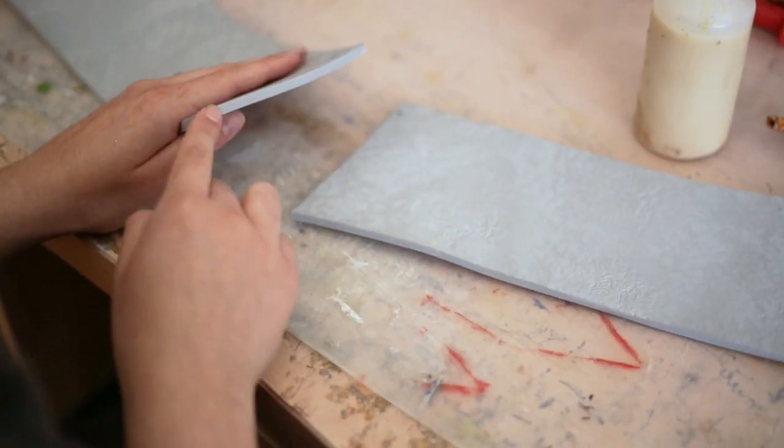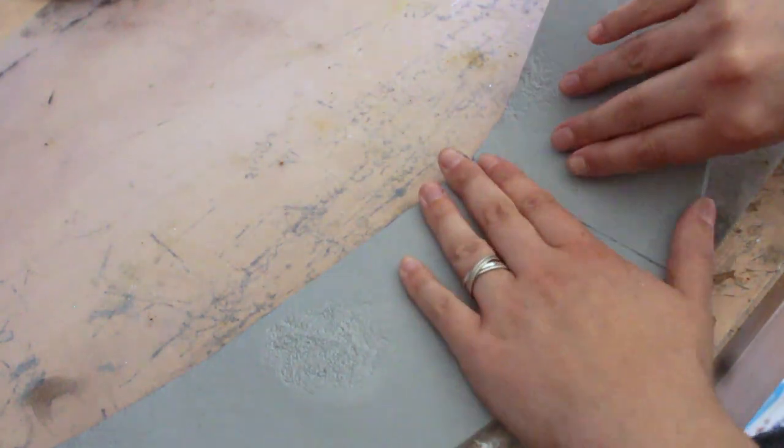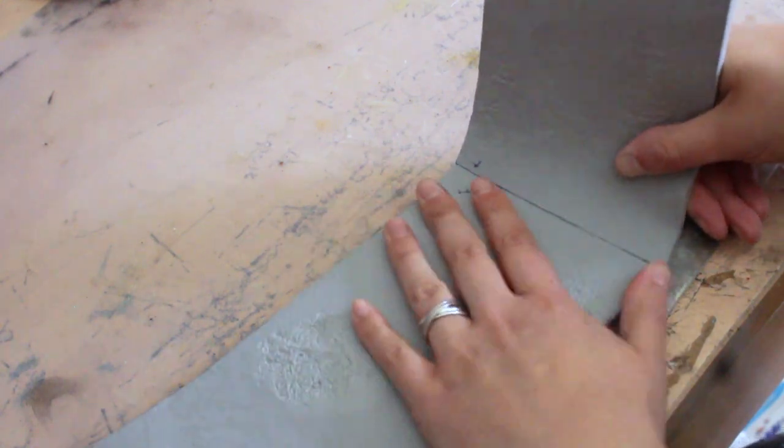Next up I started gluing my foam pieces together using contact cement. Make sure you cover both sides in a thin layer of glue and let it dry for 10 minutes before sticking them together.